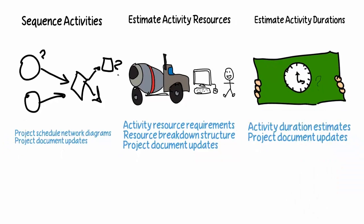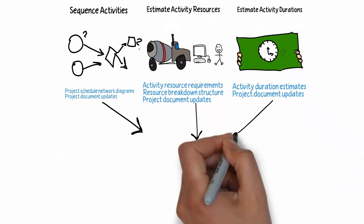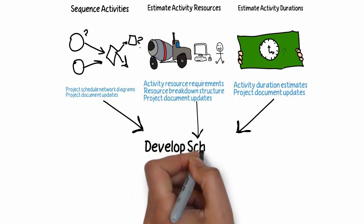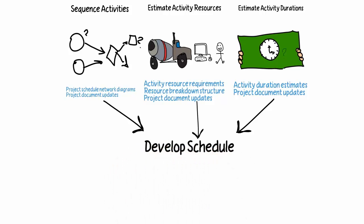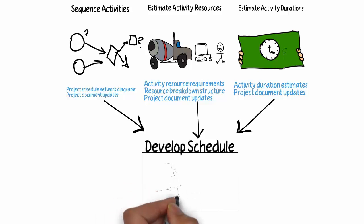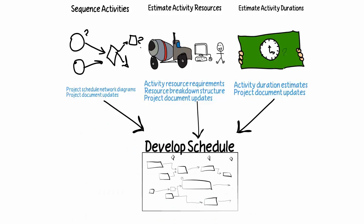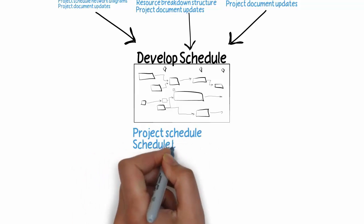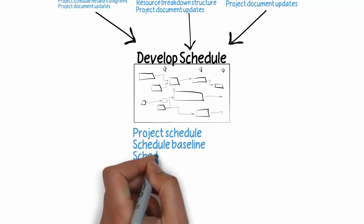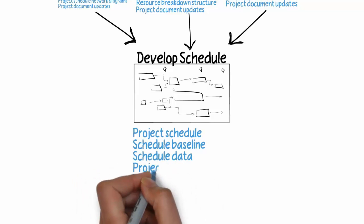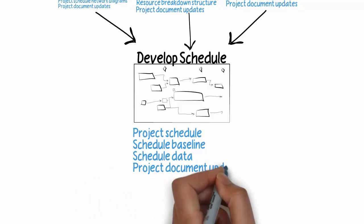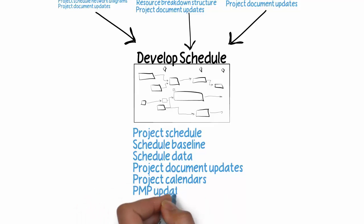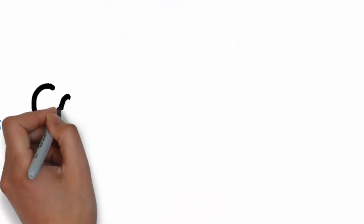In all actuality, these three processes feed and cycle back and forth, evolving based on the information that's available, and we keep developing our schedule. The output of the Develop Schedule process is of course the schedule and even a schedule baseline, as well as certain schedule data, documentation updates throughout the project, maybe a project calendar, and other project management plan updates.